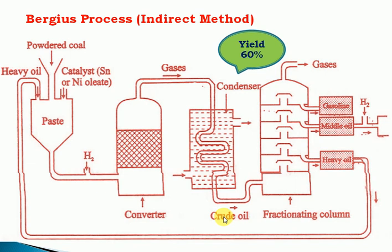The crude oil is then subjected to fractional distillation. Based on boiling points, the different hydrocarbons are separated. The primary fuel is thus converted into secondary fuels, or natural fuel into synthetic petrol. Three main products are obtained: heavy oil, middle oil, and petrol (gasoline).